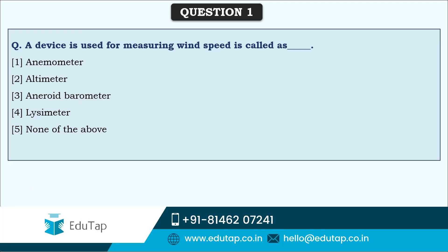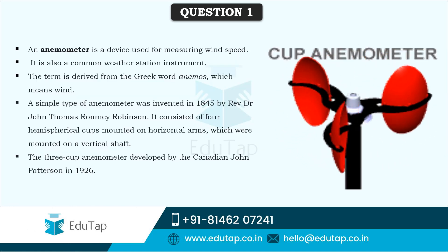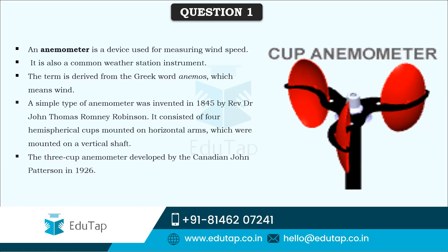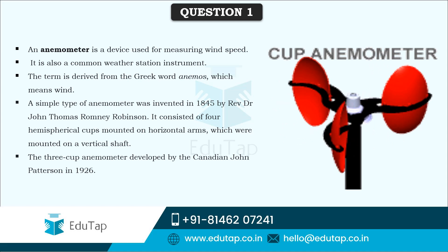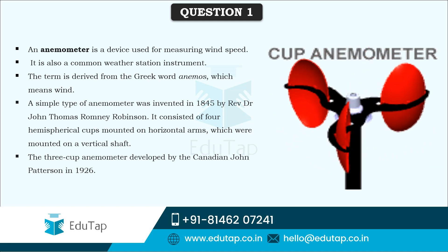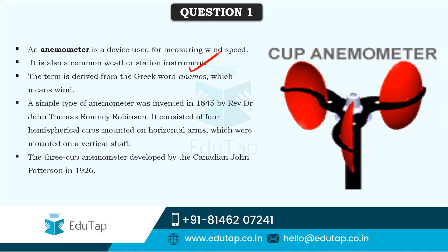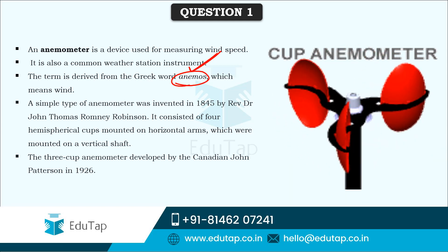The first question: a device that is used for measuring wind speed is called an anemometer. This is the cup anemometer that is used to measure the speed of the wind and it is the most common instrument used in various weather stations. The word 'anemos' means wind in Greek, from which this name is derived.